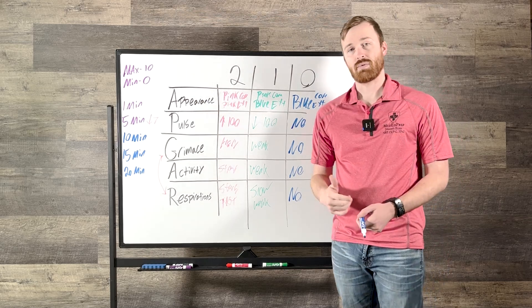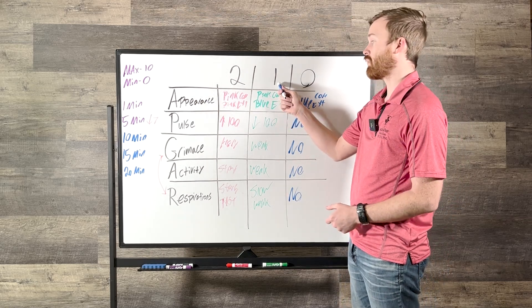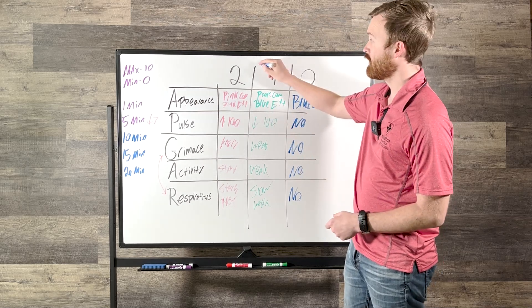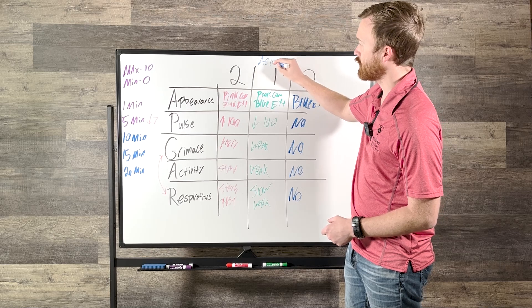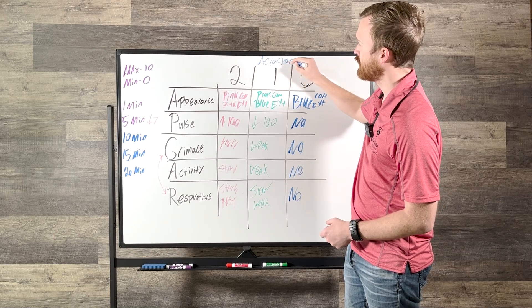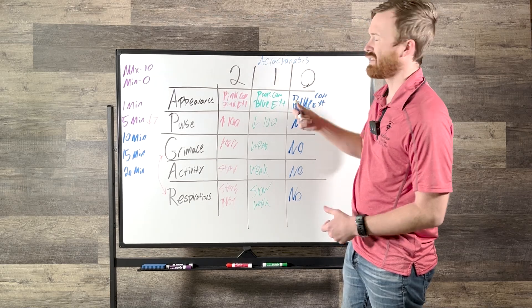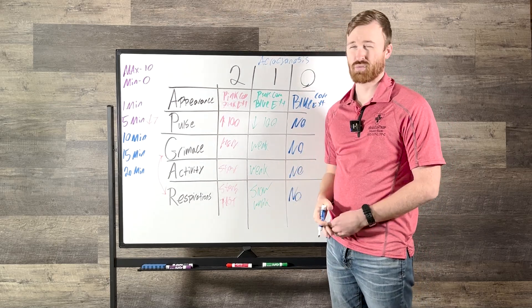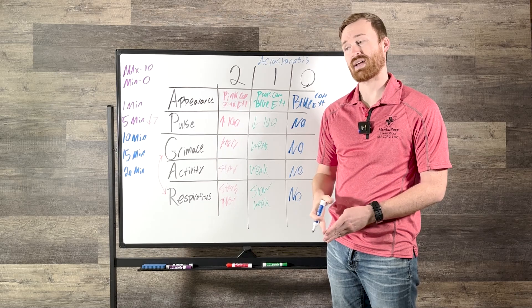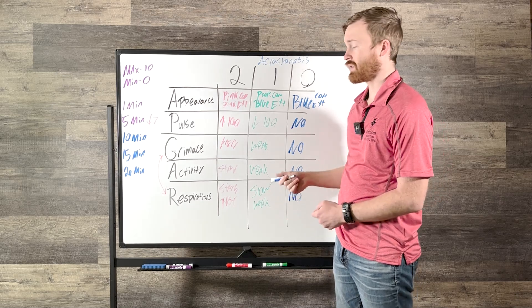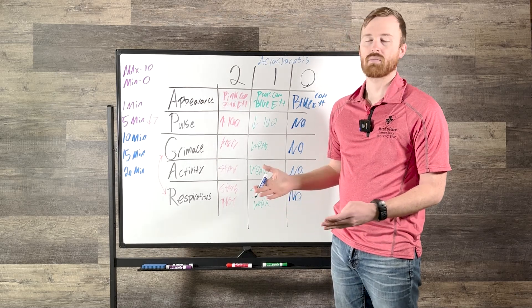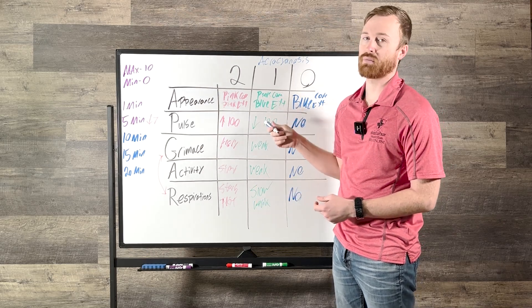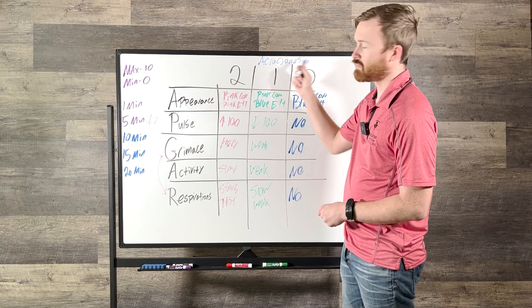Something to keep in mind is that for one point on appearance, for the pink core, the blue extremities, this is also going to be a term called acrocyanosis. That can be entirely normal. And that is something that you can expect reasonably up to about one month after delivery. So you're going to have a one month old or somebody who's 27 days and they're going to still present with a pink core and blue extremities whenever you look at them. Totally normal.